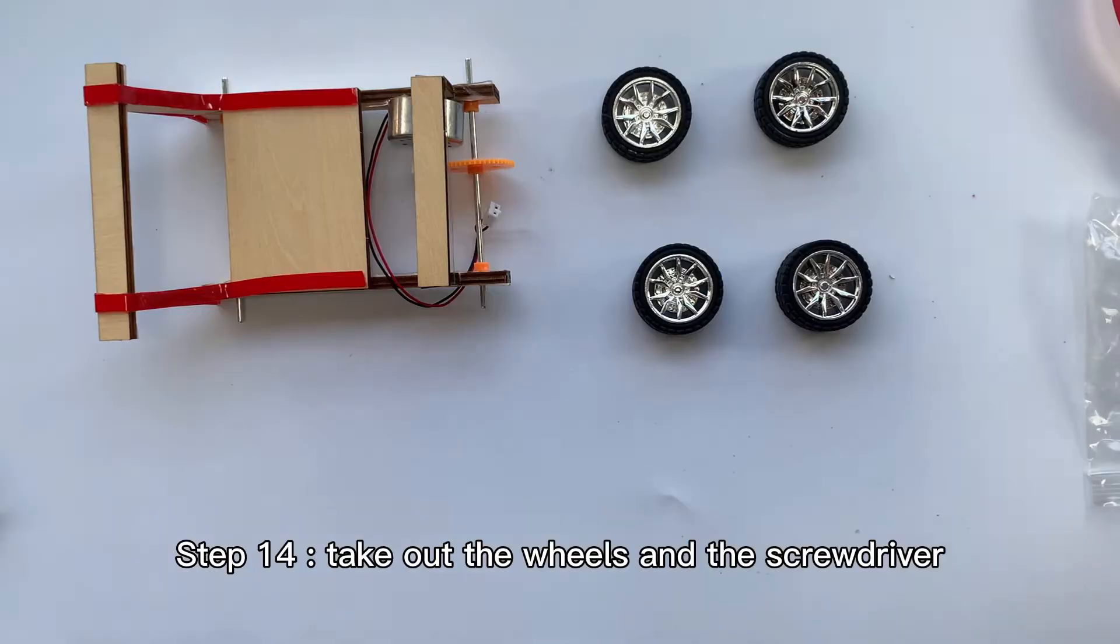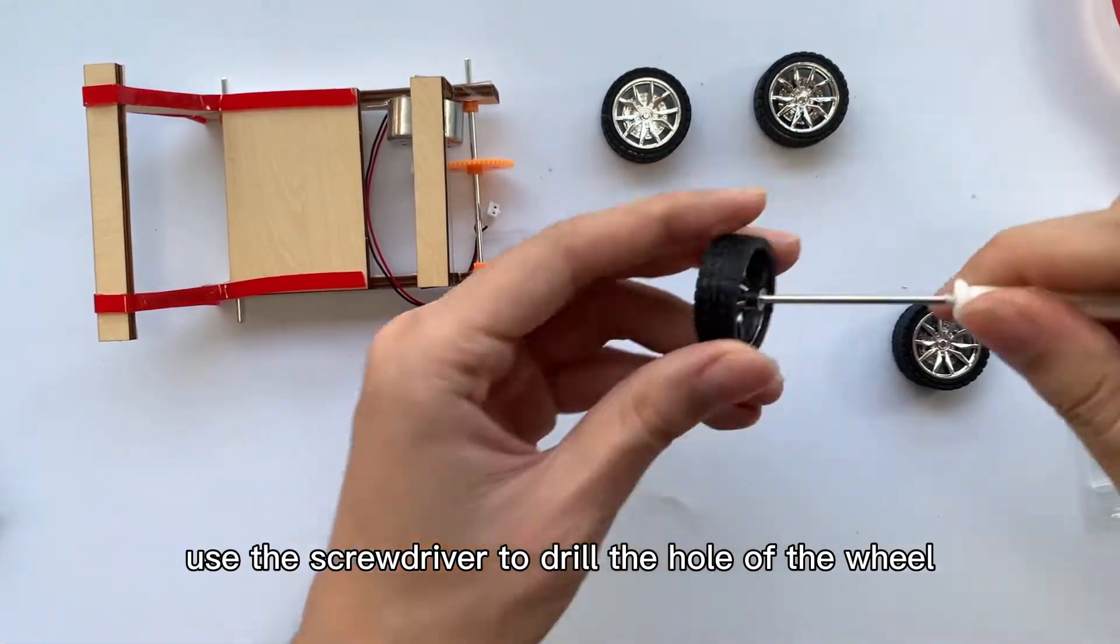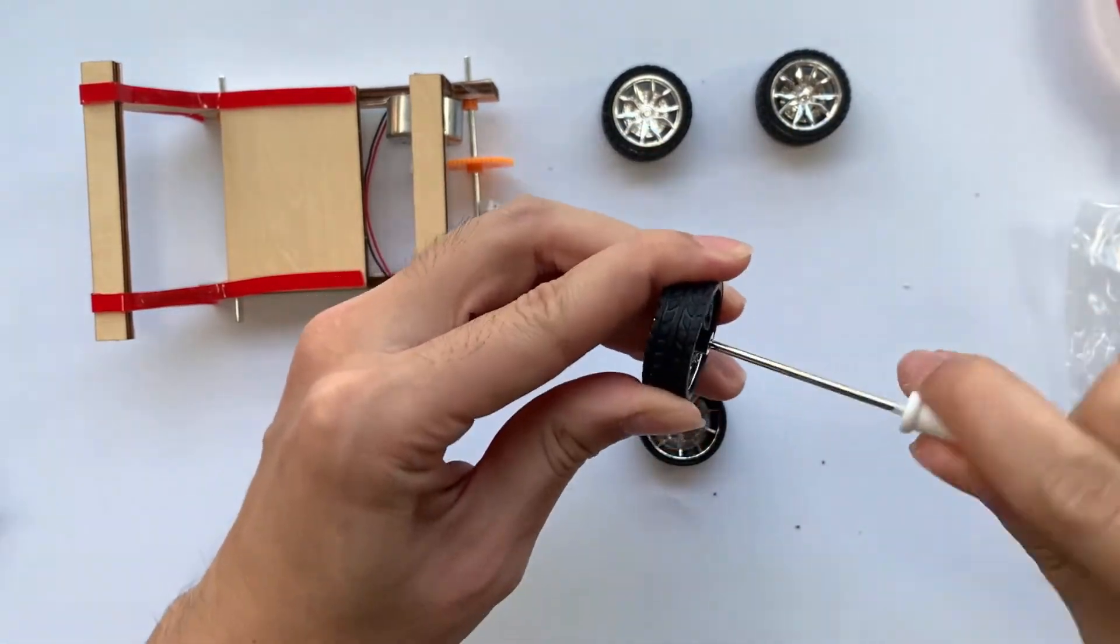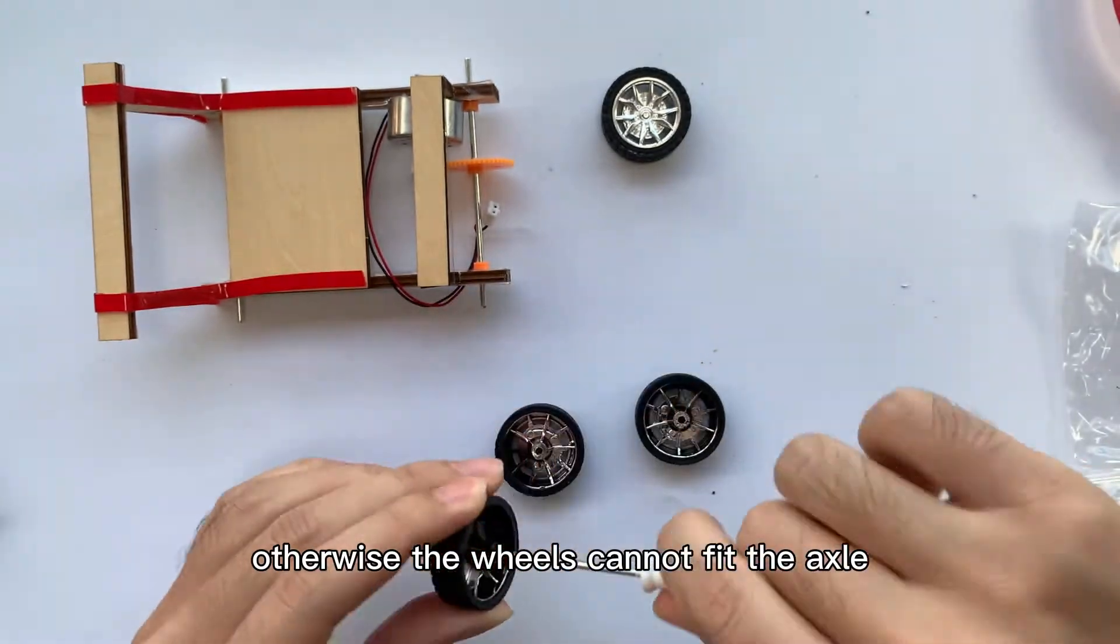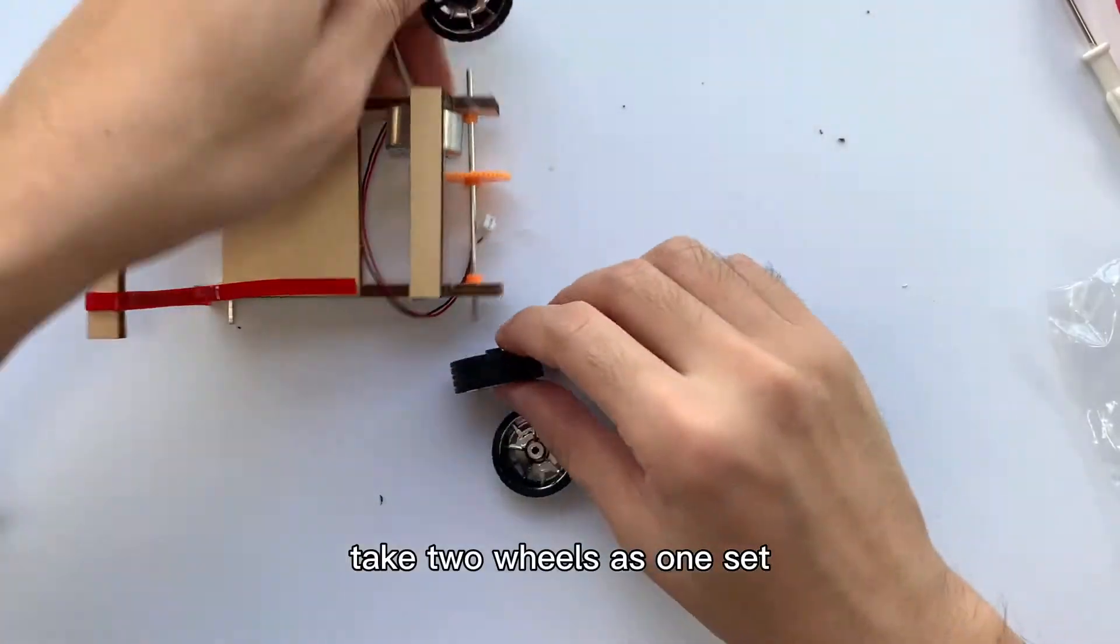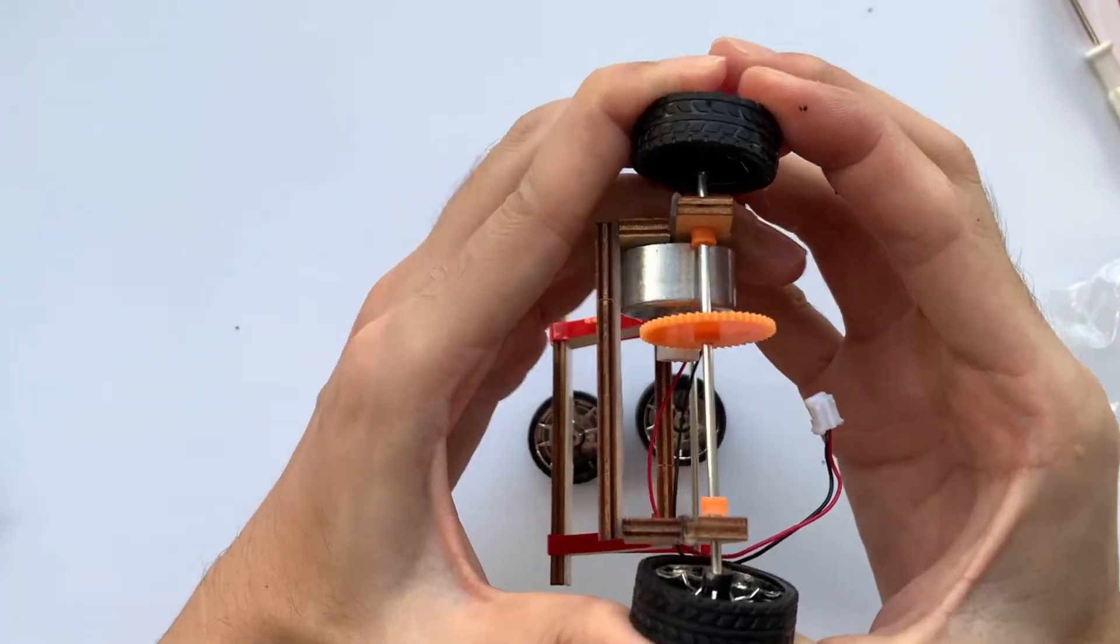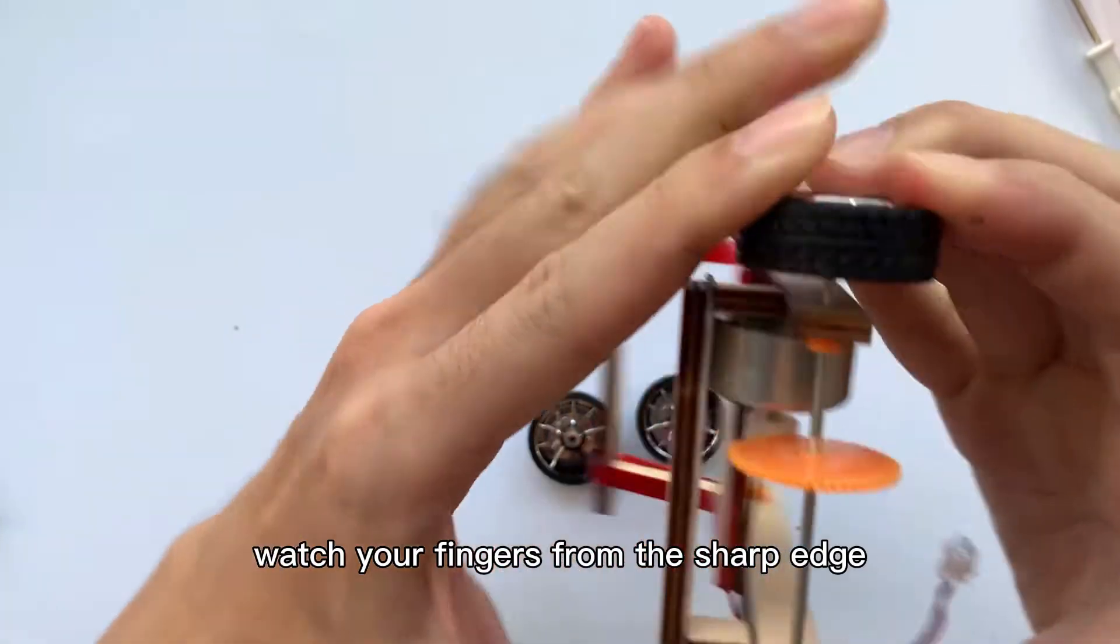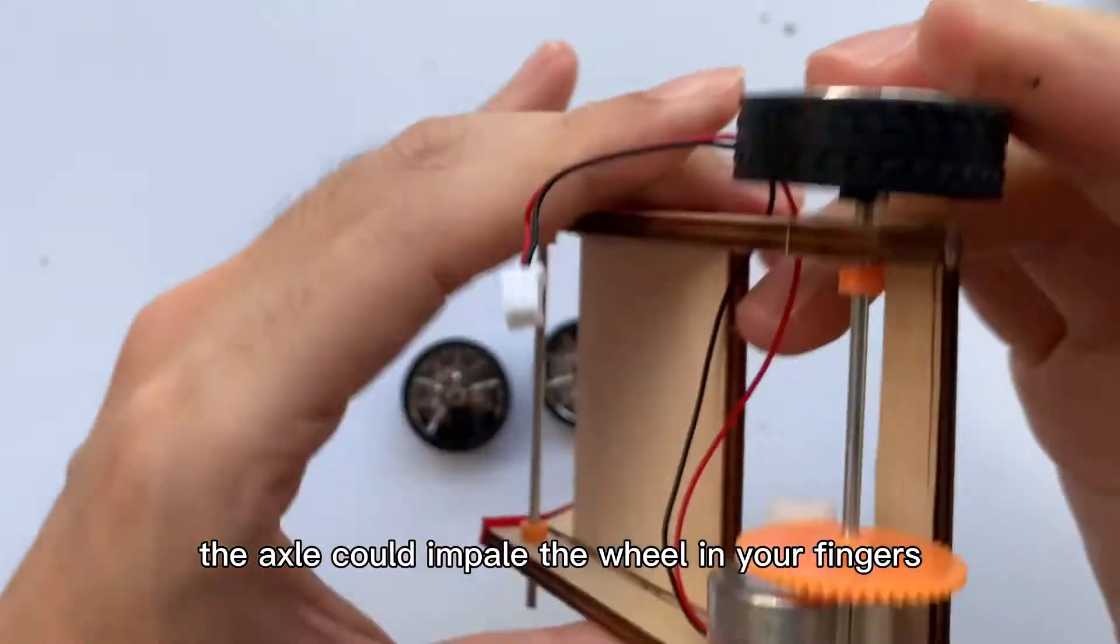Step 14: Take out the wheels and the screwdriver. Use the screwdriver to drill the hole of the wheel slightly in order to install wheels more easily. Please don't drill it too hard; otherwise the wheels cannot fit the axle. Take two wheels as one set and press each other toward the axle. Please must be careful when pressing them. Watch your fingers from the sharp edge. Don't press too hard; otherwise the axle could impale the wheel in your fingers.